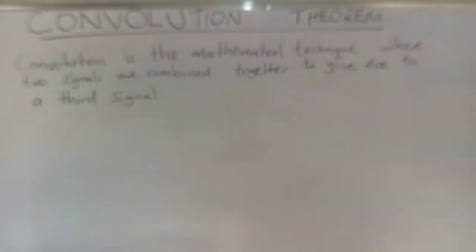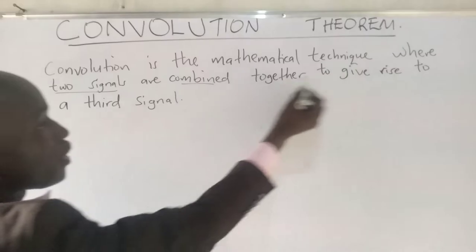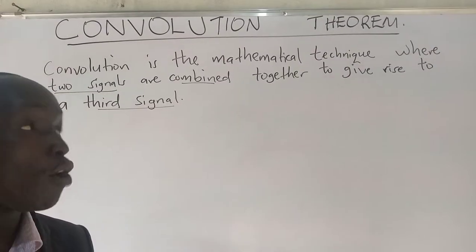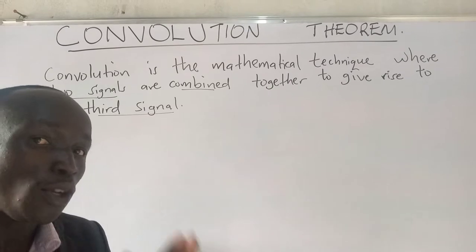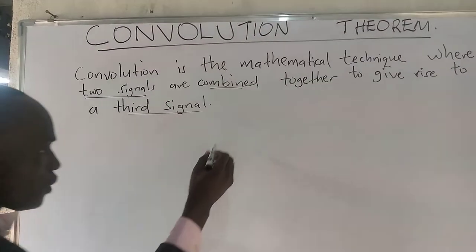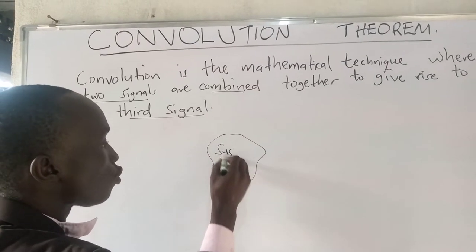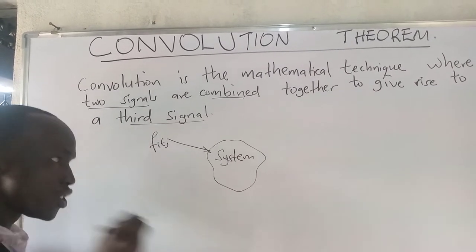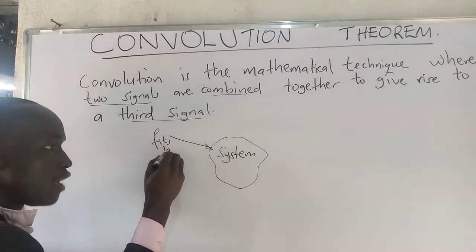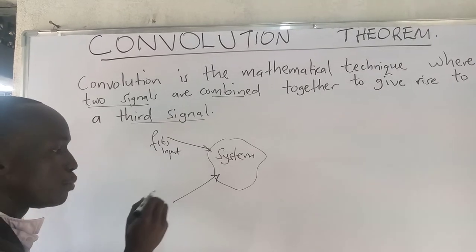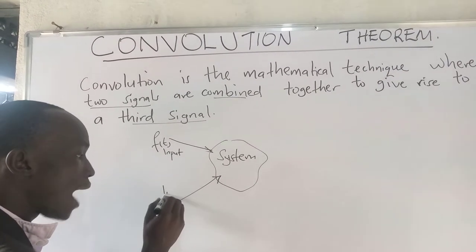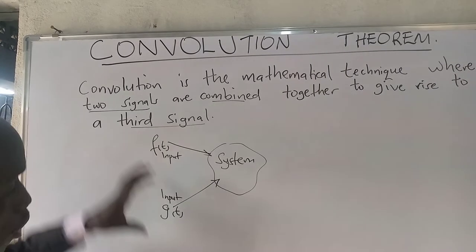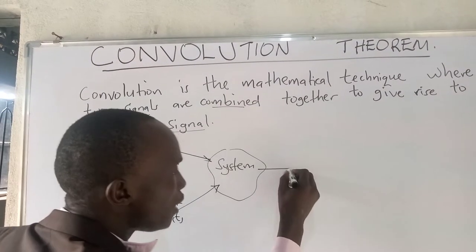The convolution theorem is a mathematical technique where two signals are combined together to give rise to a third signal. We combine two inputs — two functions — to give a third function. For example, in a system we put two inputs: f of t and g of t. These two inputs or signals give rise to a third output h of t.